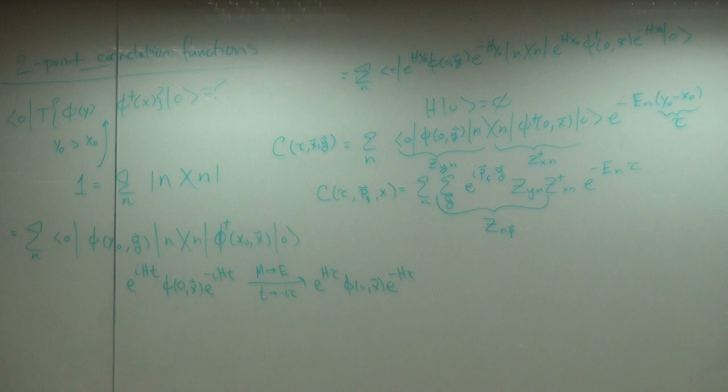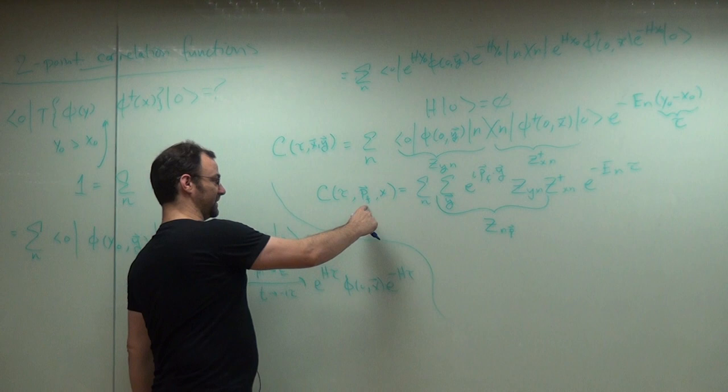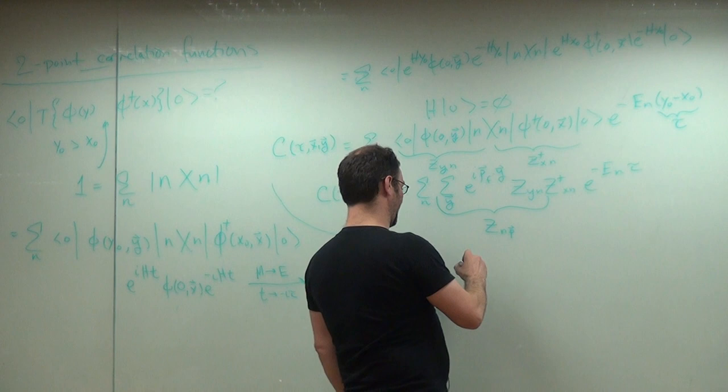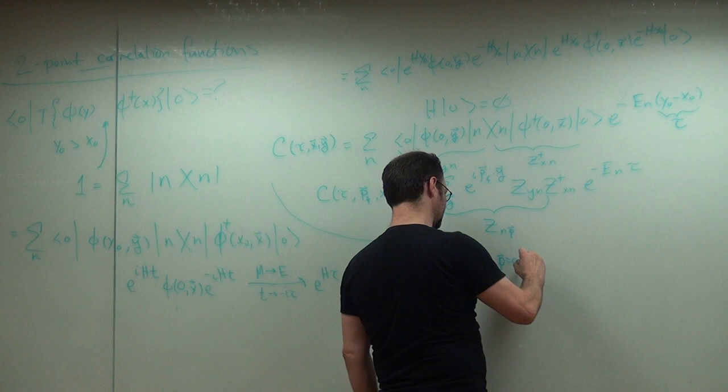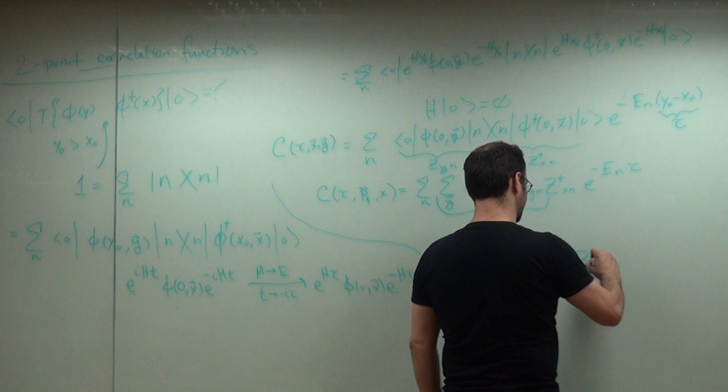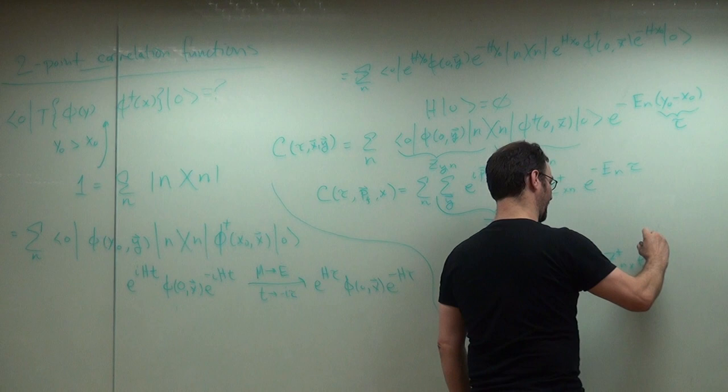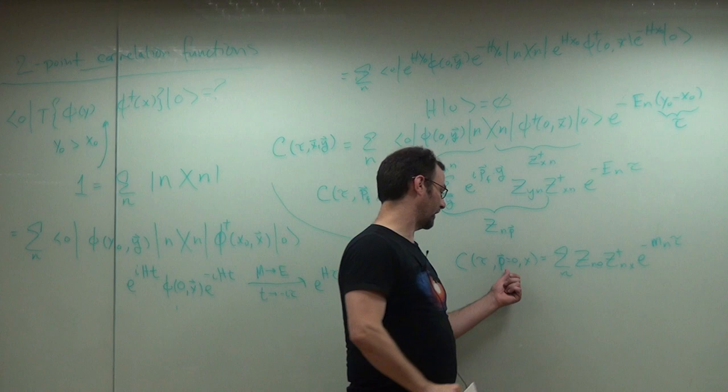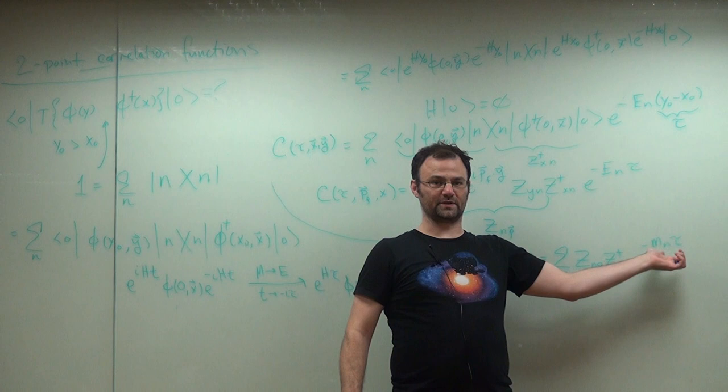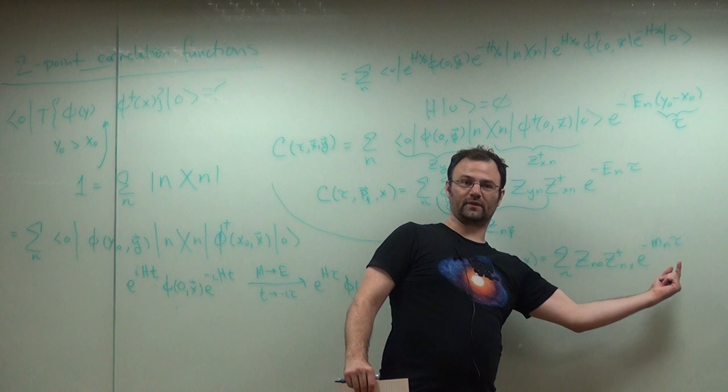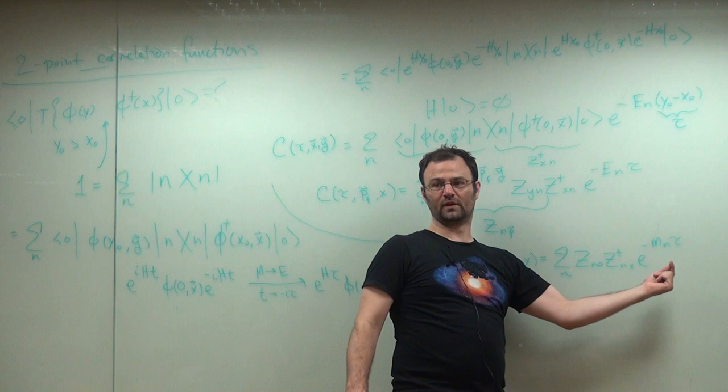Okay. So, from here, for example, we can set P to zero. If we set P to zero, what do we get? We get C tau P equals zero, x. This is just going to be sum over n, z n zero, z dagger n x, e to the minus, I'll call it m n tau. Just to remind us, since we projected to zero momentum, we're now going to pick off the mass of the particle. And so, in Euclidean space, without ever having to worry about wick rotating, you see from the two-point function, you can get the spectrum. So, this is the thing, in fact, we know how to do with lattice QCD better than any other thing, is compute the spectrum. That's what we're the best at.